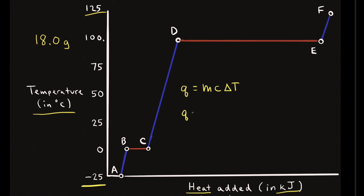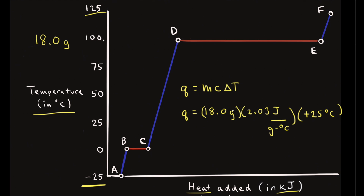We're solving for Q. The mass is 18.0 grams, the specific heat of ice is 2.03 joules per gram degree Celsius, and the change in temperature is final minus initial: zero minus negative 25 gives us positive 25 degrees Celsius. Grams and degrees Celsius cancel out, giving us Q equal to 9.1 × 10² joules to two significant figures, or 0.91 kilojoules.